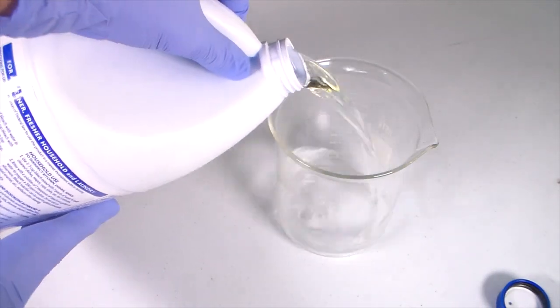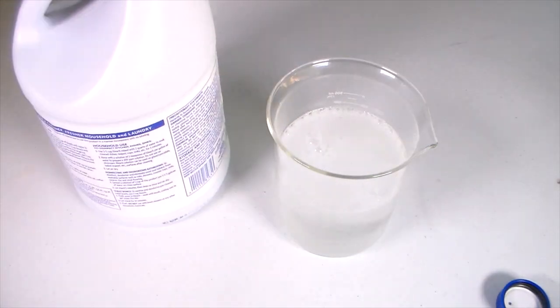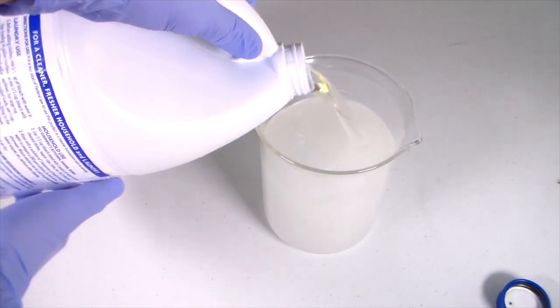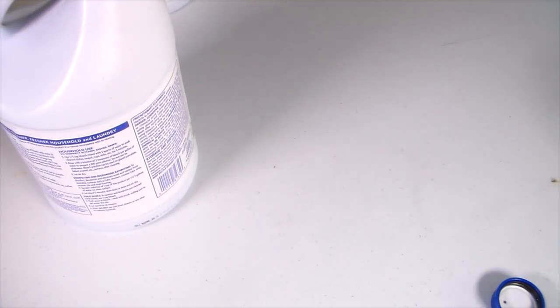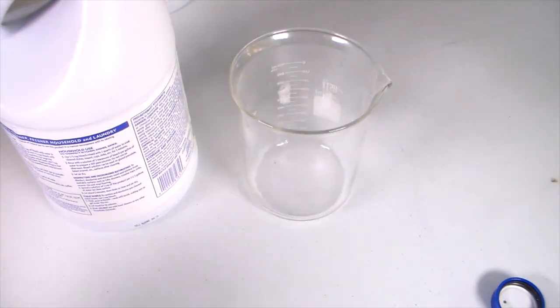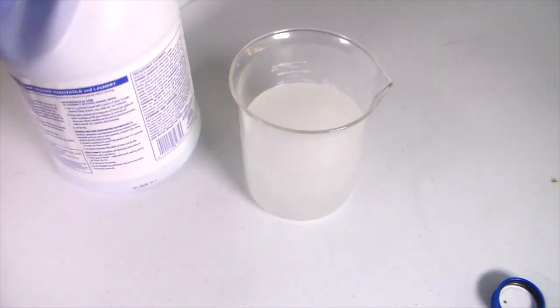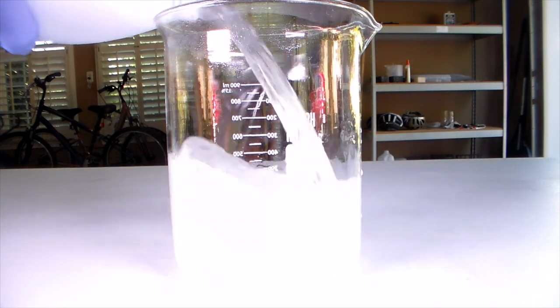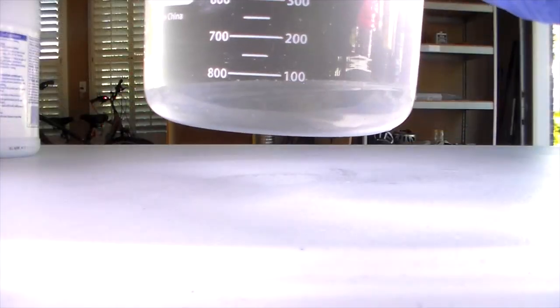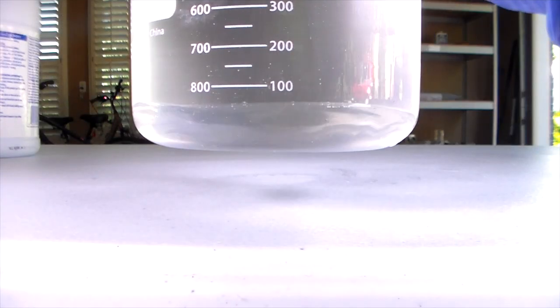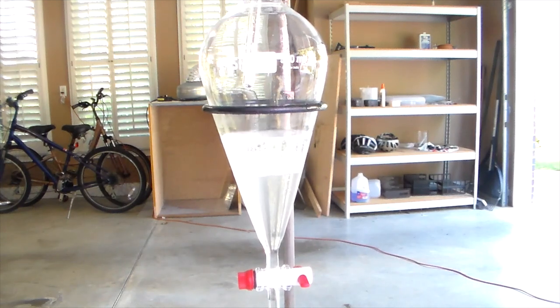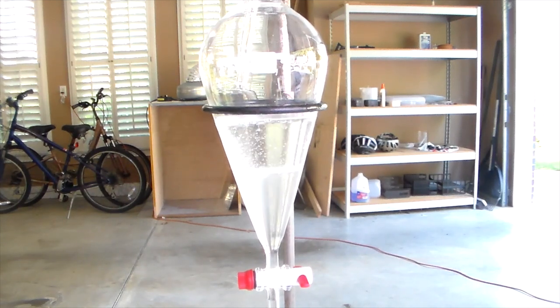After letting the reaction mixture sit for about 45 minutes, the majority of the water can be decanted from each beaker. This water has traces of chloroform in it and should not be flushed down the drain. In the video description, I discuss how to dispose of the waste. After decanting about three liters of water, the last remnants of the bottle contain our chloroform. The chloroform from both bottles was transferred to a separatory funnel and allowed to settle.